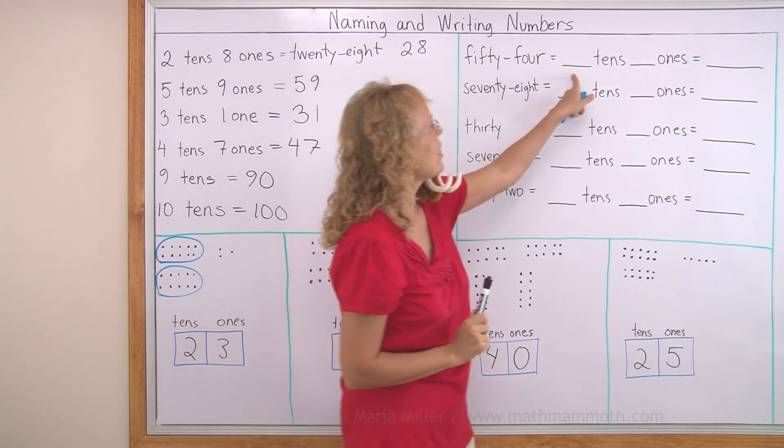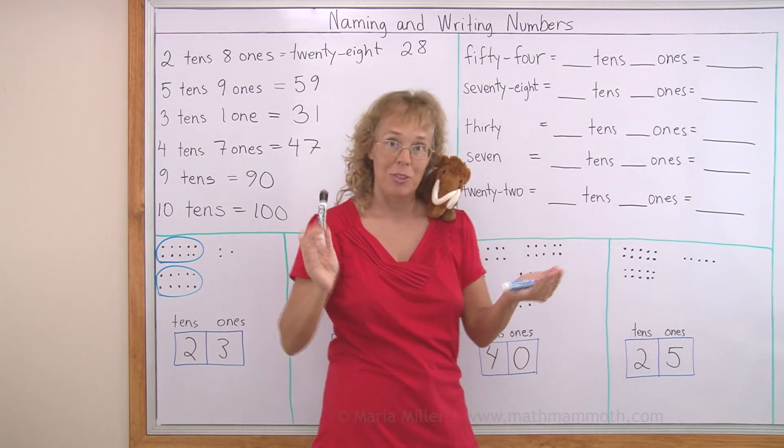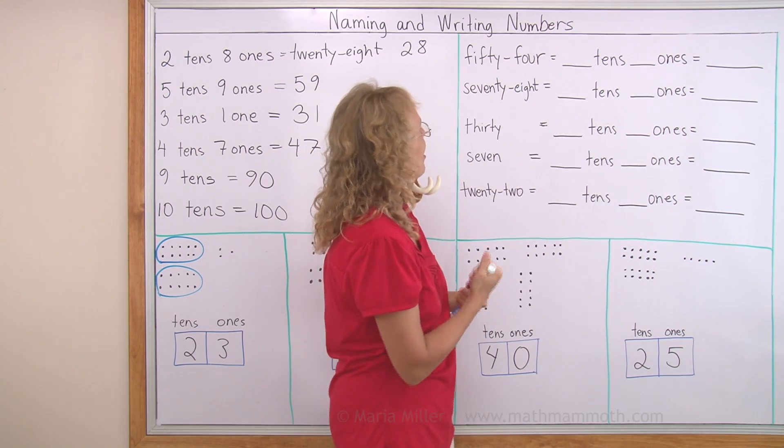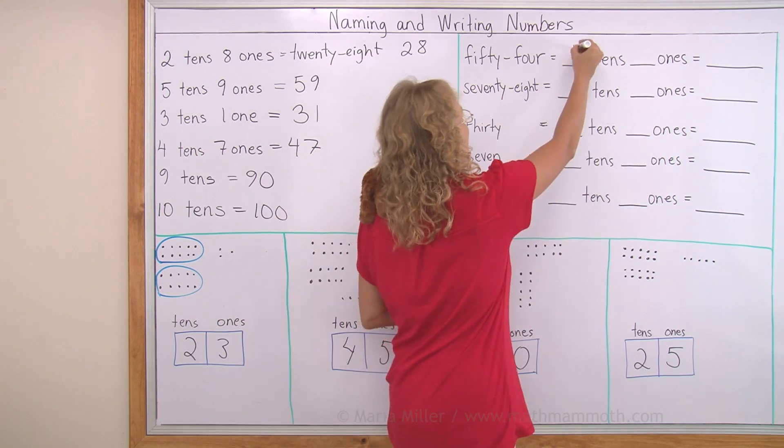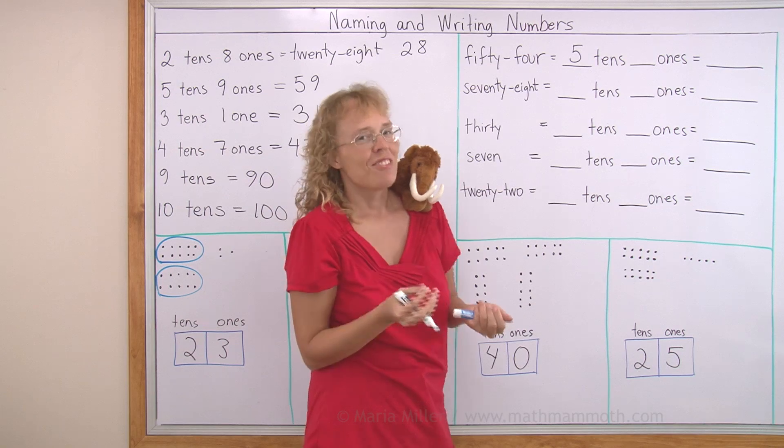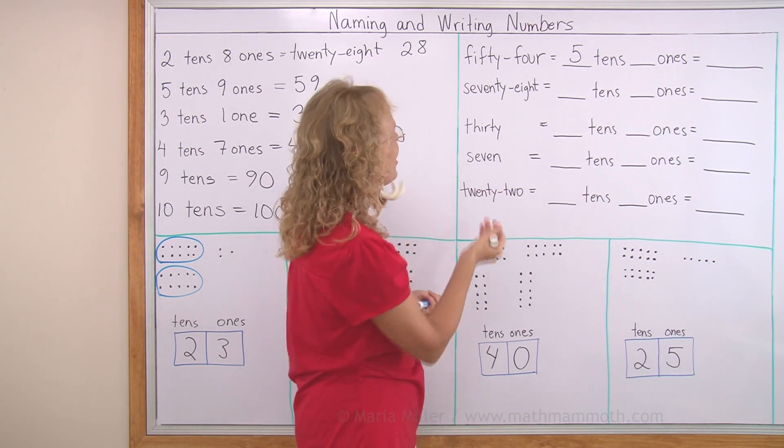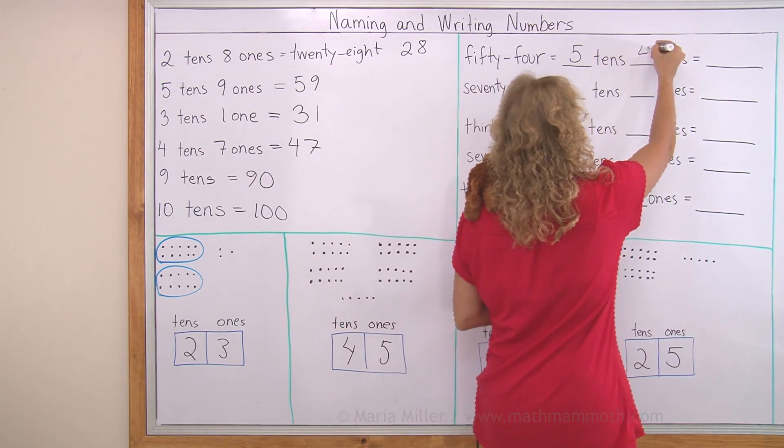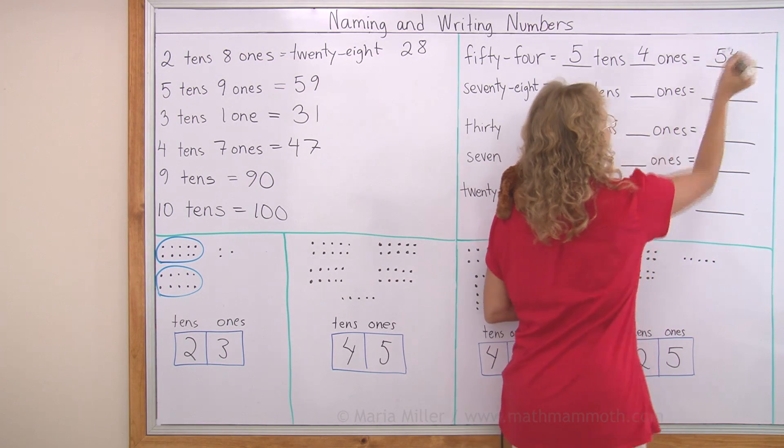54. How many tens is it? How many ones? And how do you write it? Okay, 50 was 5 tens. And they are not calling it 5-t, you know? They call it 50. And then, 4 ones. So it is 5 and 4 like that. 54.